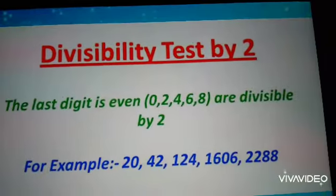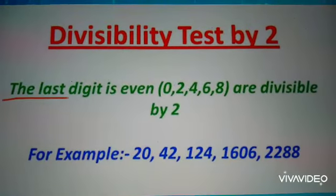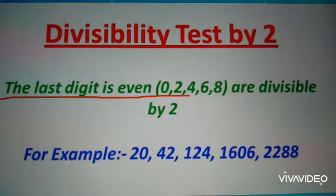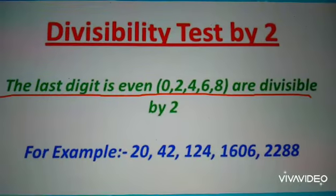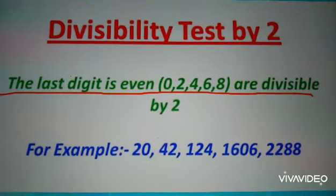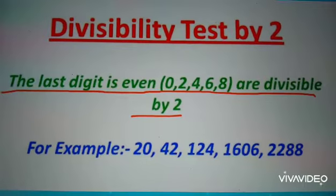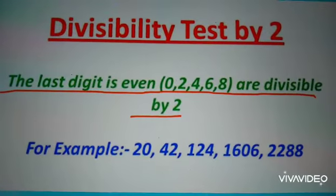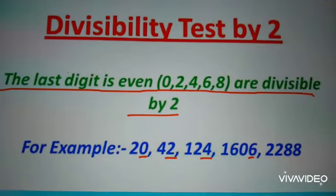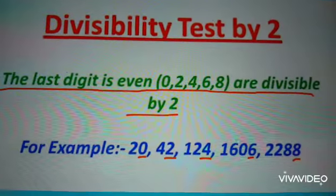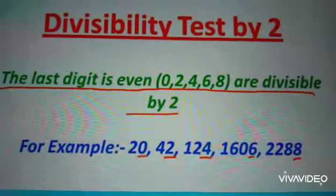Divisibility test by 2: if the last digit is even — 0, 2, 4, 6, or 8 — the number is divisible by 2. That means, if the digit at the ones place is 0, 2, 4, 6, or 8, then the whole number is divisible by 2.